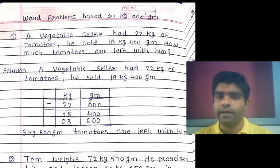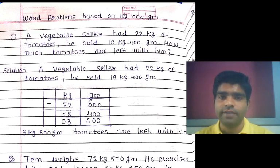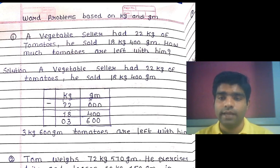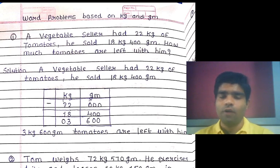Example one: A vegetable seller had 22 kilograms of tomatoes and sold 18 kg 400 grams. How much tomato is left with him? First of all, we write down the given condition. The vegetable seller had 22 kg of tomatoes, and he sold — meaning sold — 18 kg 400 grams. This means we have to use the subtraction sign.